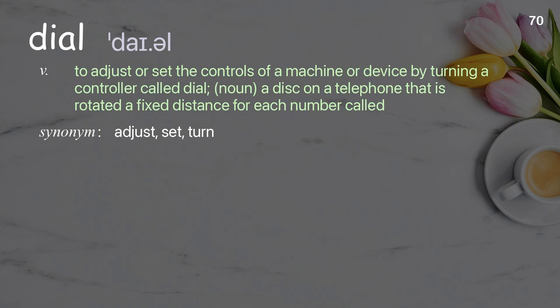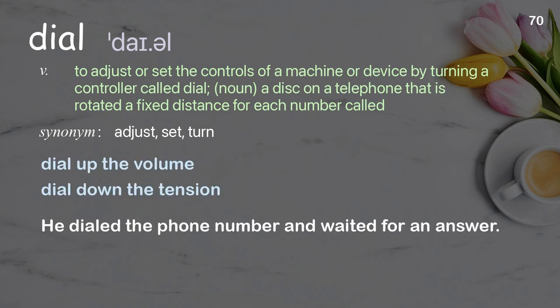Dial: to adjust or set the controls of a machine or device by turning a controller called a dial. Noun: a disk on a telephone rotated a fixed distance for each number called. Examples: dial up the volume; dial down the tension; he dialed the phone number and waited for an answer.